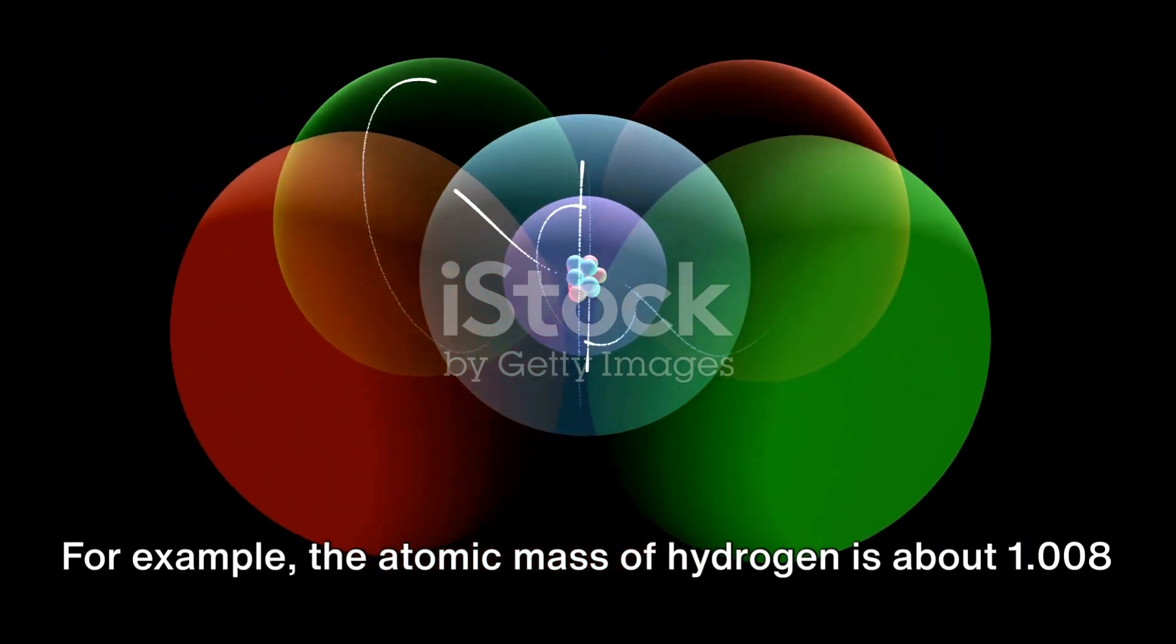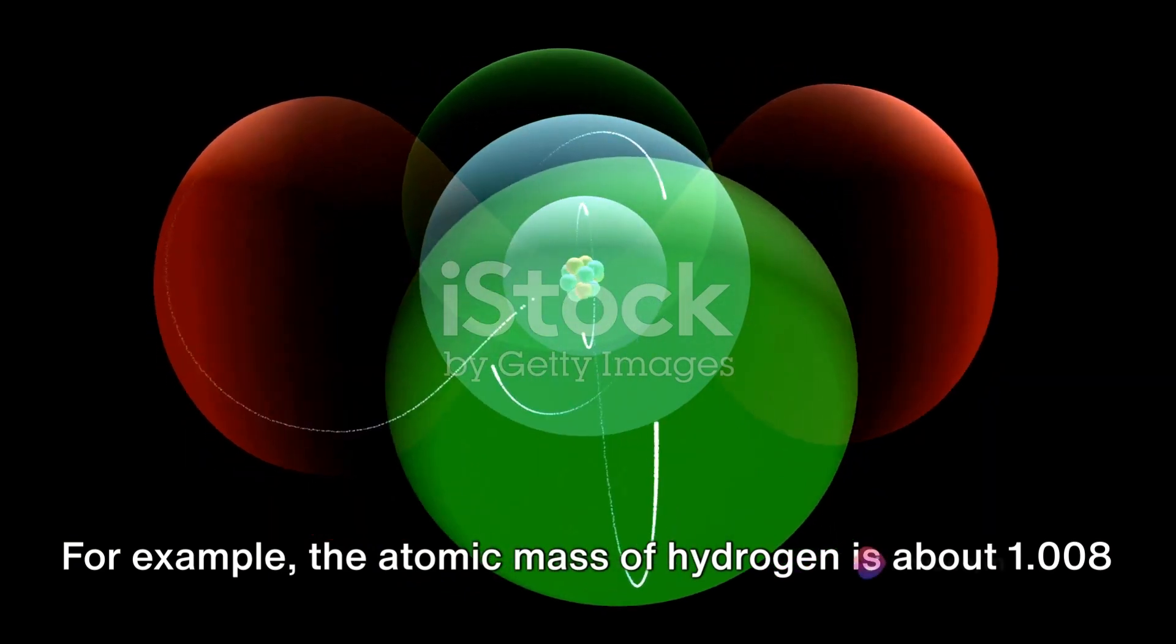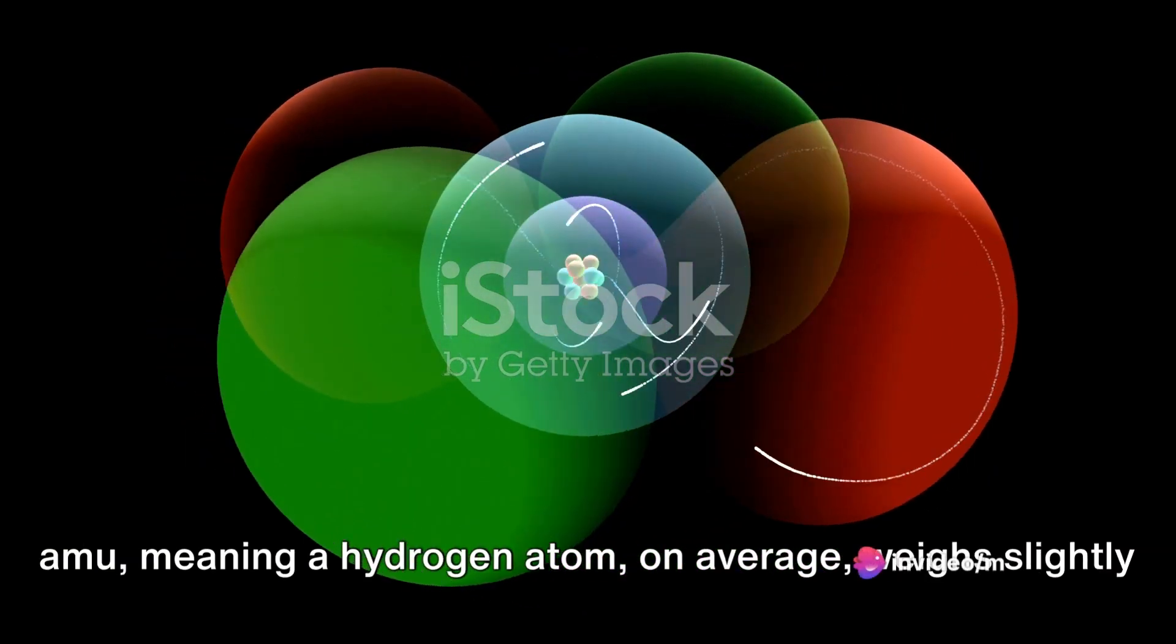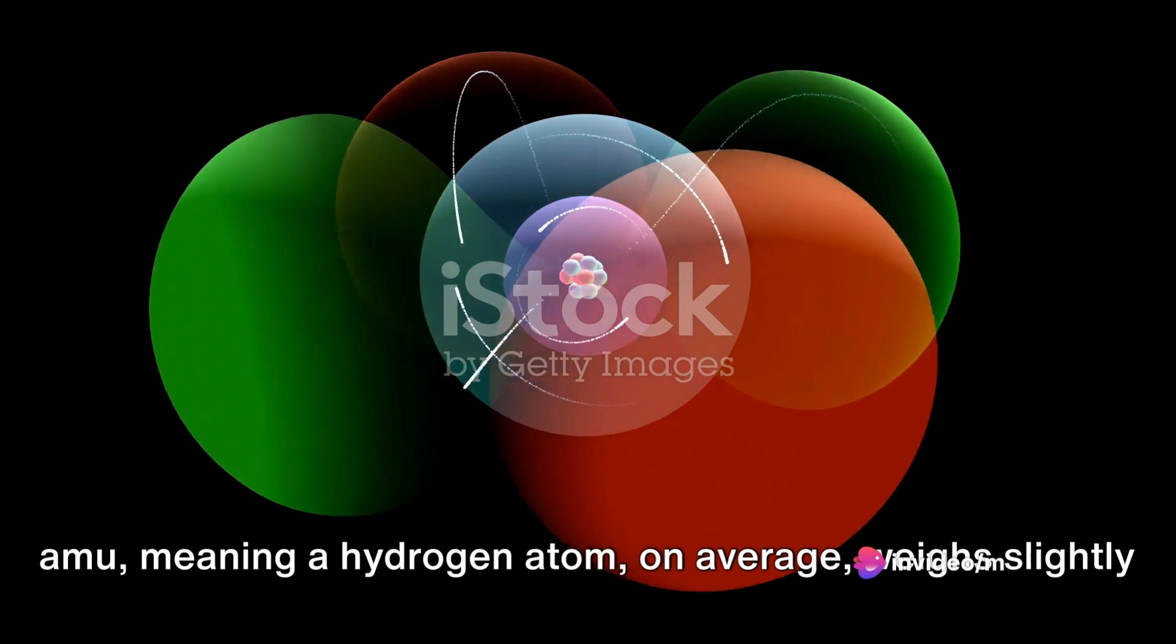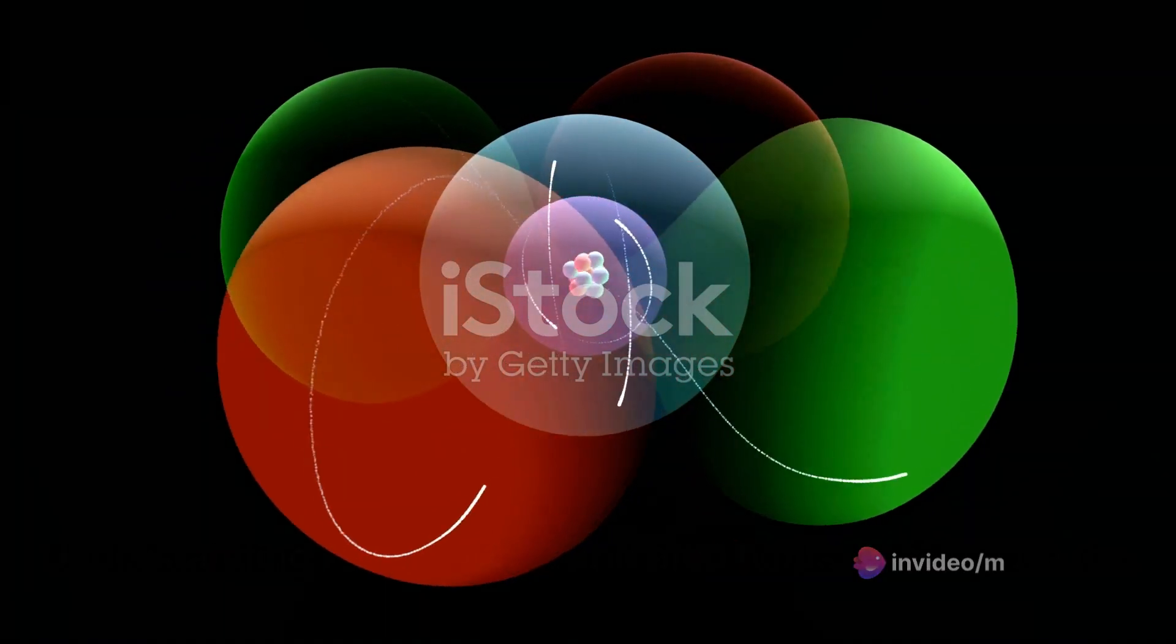For example, the atomic mass of hydrogen is about 1.008 atomic mass units, meaning a hydrogen atom, on average, weighs slightly less than one twelfth the mass of a carbon-12 atom.